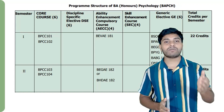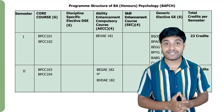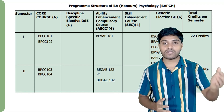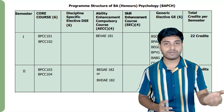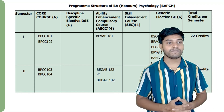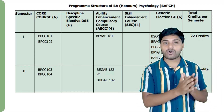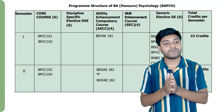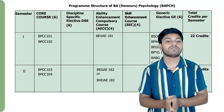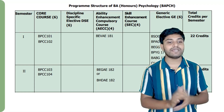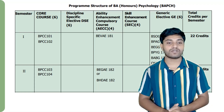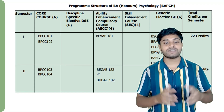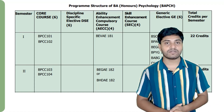We have divided the papers into five categories. There are three details in semester 1 and semester 2. The five categories are: core courses, discipline specific electives, ability enhancement compulsory courses, skill enhancement courses, and generic electives.